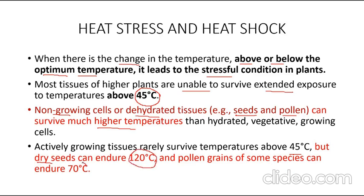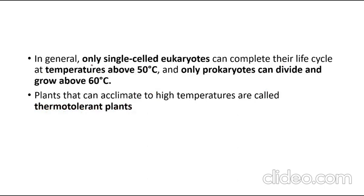Some dry seeds can endure temperatures up to 120 degrees centigrade, and some pollen grains can endure around 70 degrees centigrade. Only single-cell eukaryotes have the ability to survive above 50 degrees centigrade. Multi-cellular eukaryotes cannot, and only prokaryotes can divide above 60 degrees centigrade.